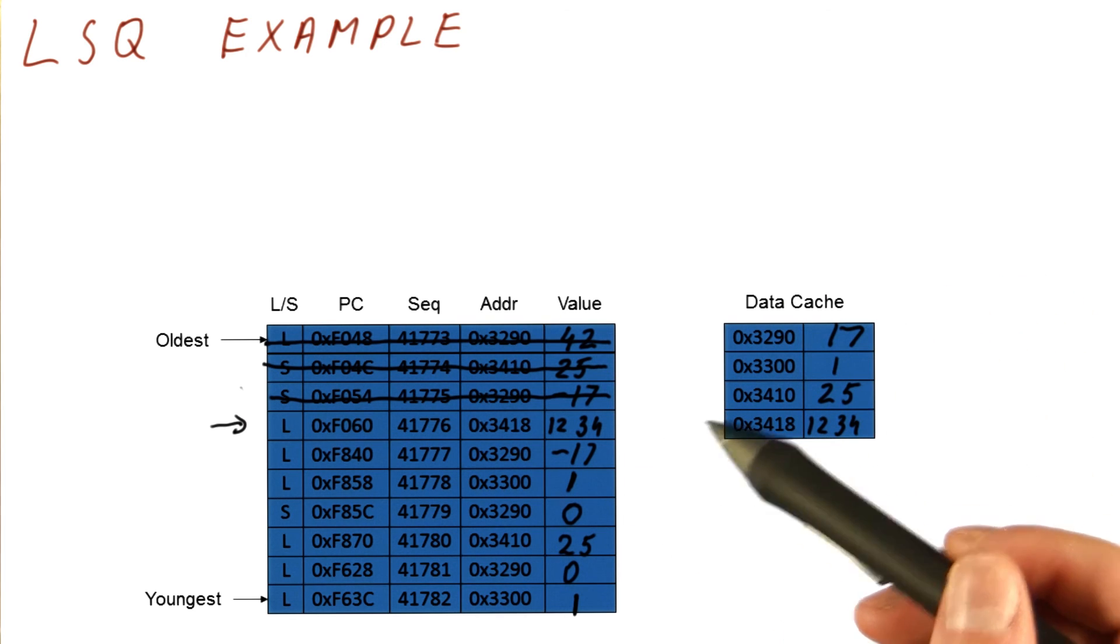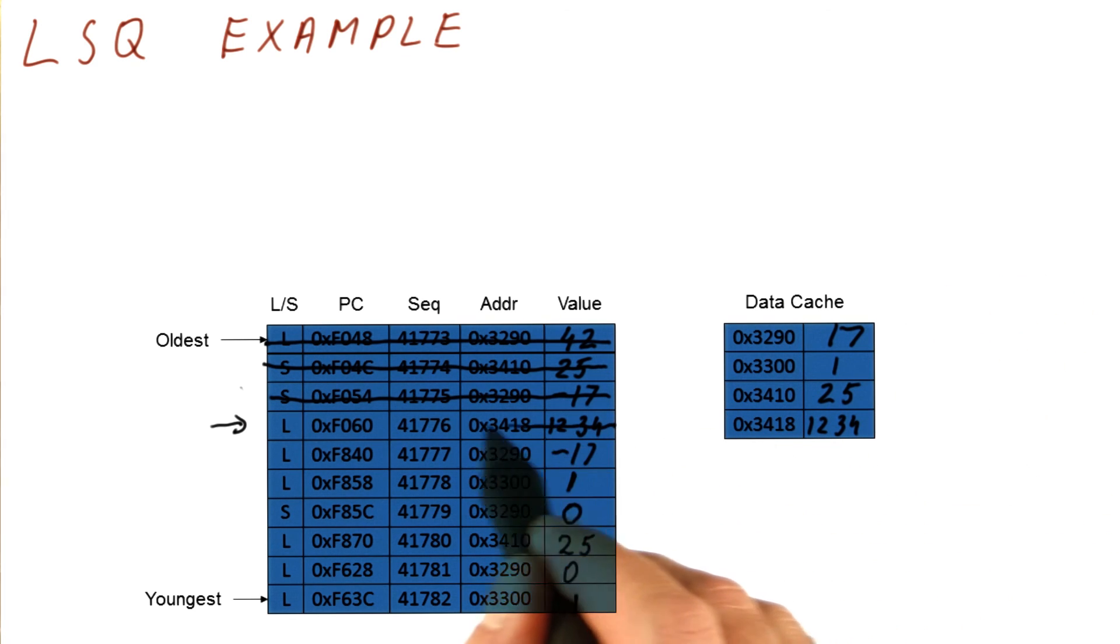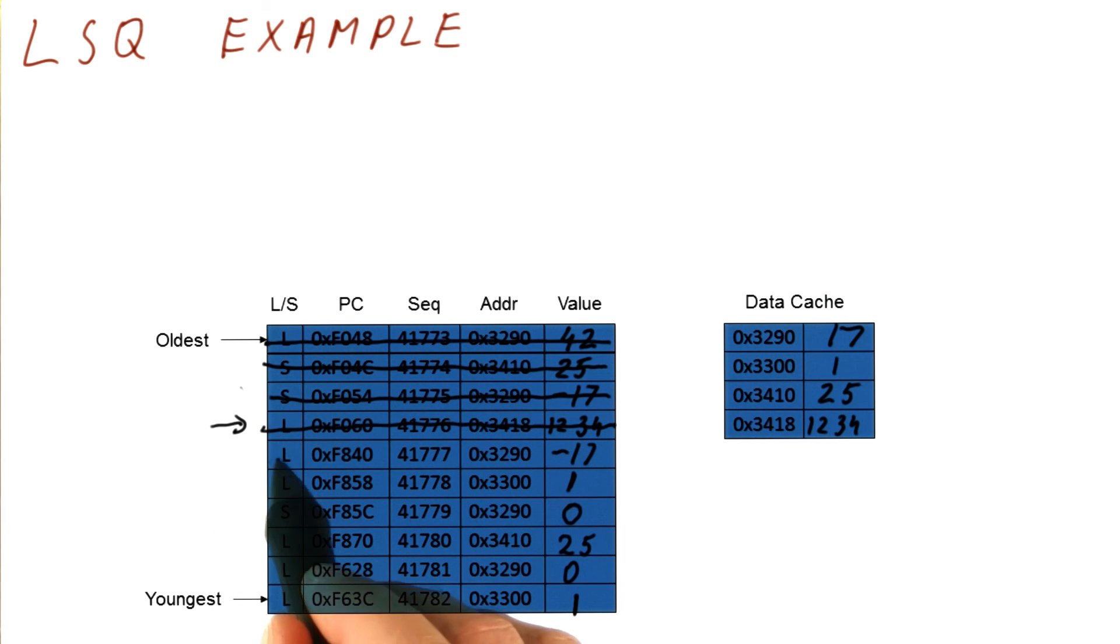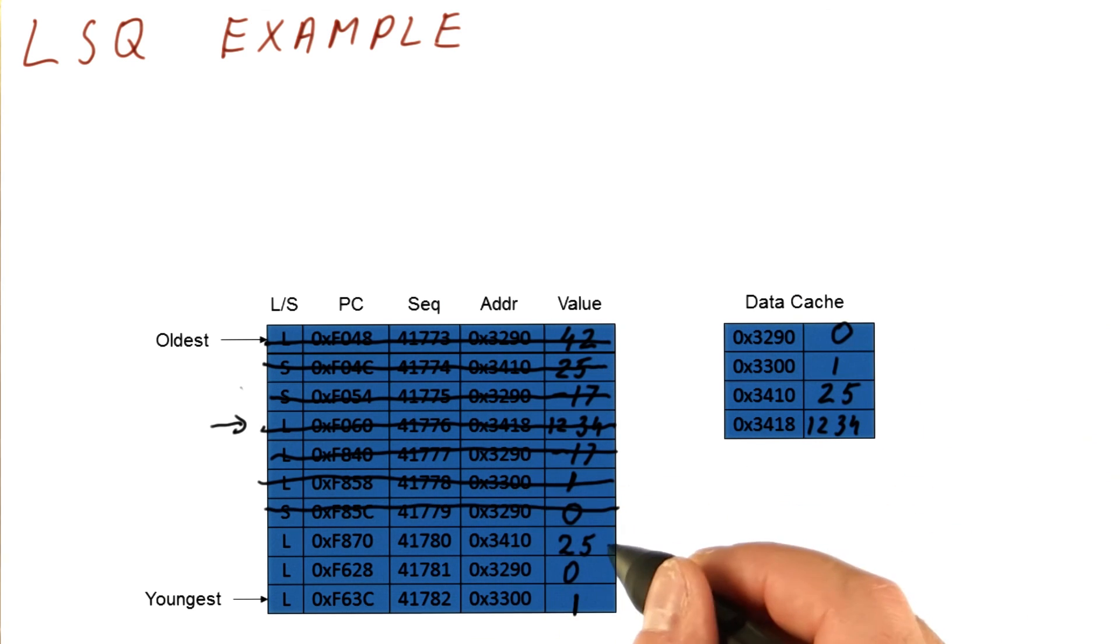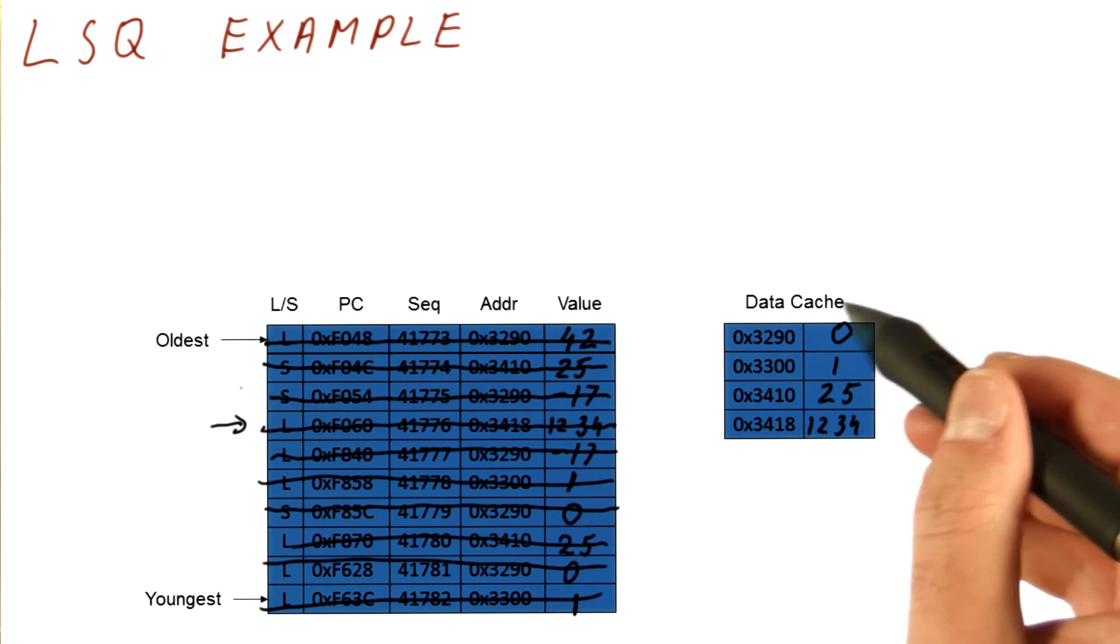This process will now go on. The load commits and deposits this value in its register. Another load can commit, and another one. When the store commits, it overrides the 17 with a 0. And then the loads commit, and the final content of the cache is this.